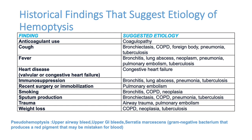Heart disease — congestive heart failure or valvular disease like mitral stenosis — can cause hemoptysis. Immunosuppression or chronic steroid use predisposes to bronchitis, lung abscess, pneumonia, and TB. Recent surgery or immobilization is a very important clue for pulmonary embolism — if a bedridden patient acutely develops severe cough, chest pain, and hemoptysis, think pulmonary embolism. Smoking can produce COPD and malignancies.